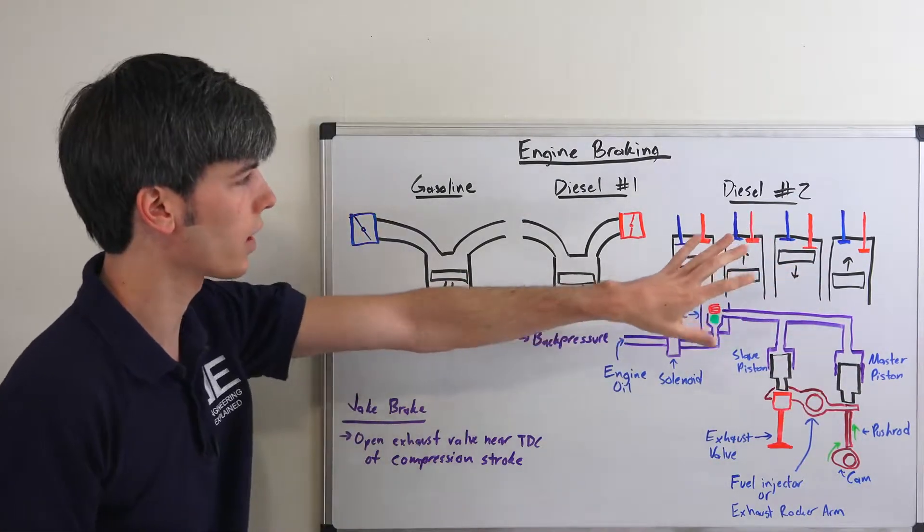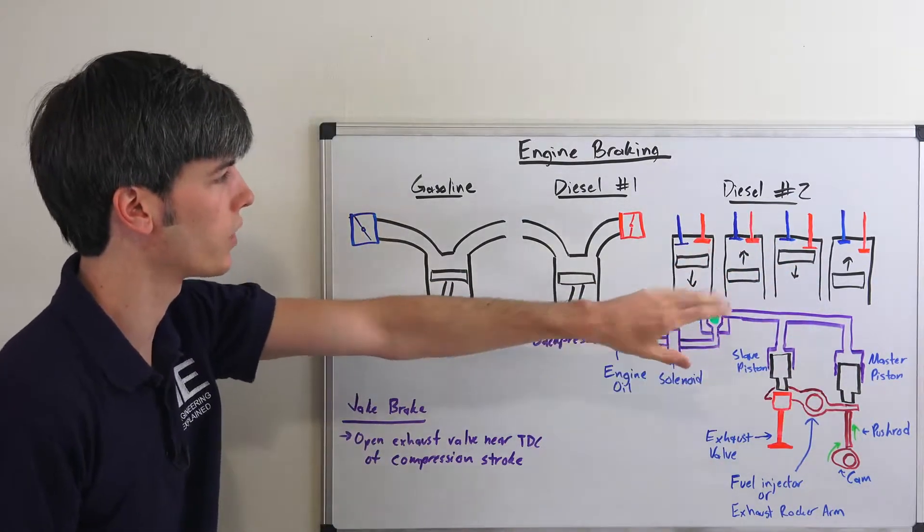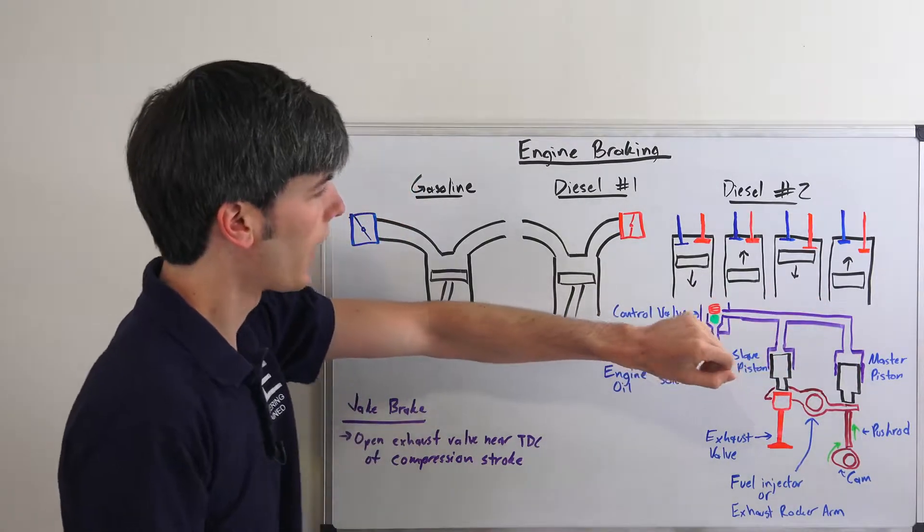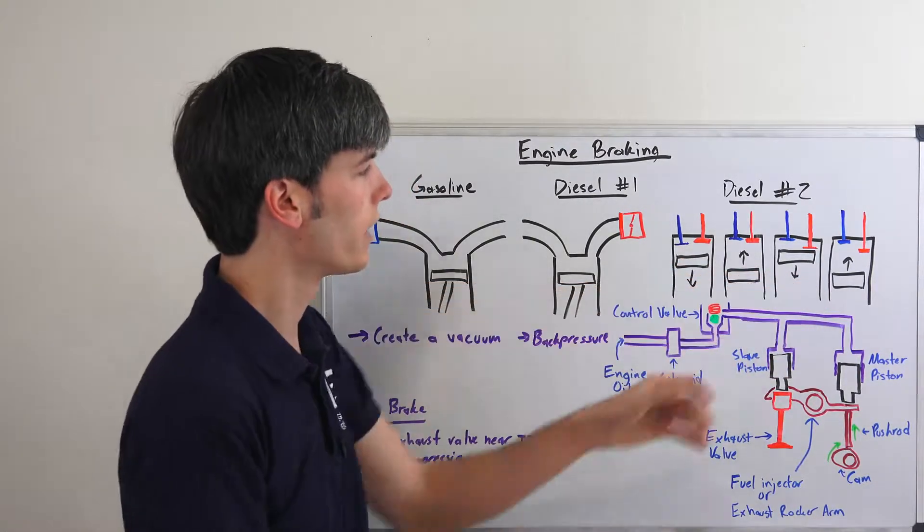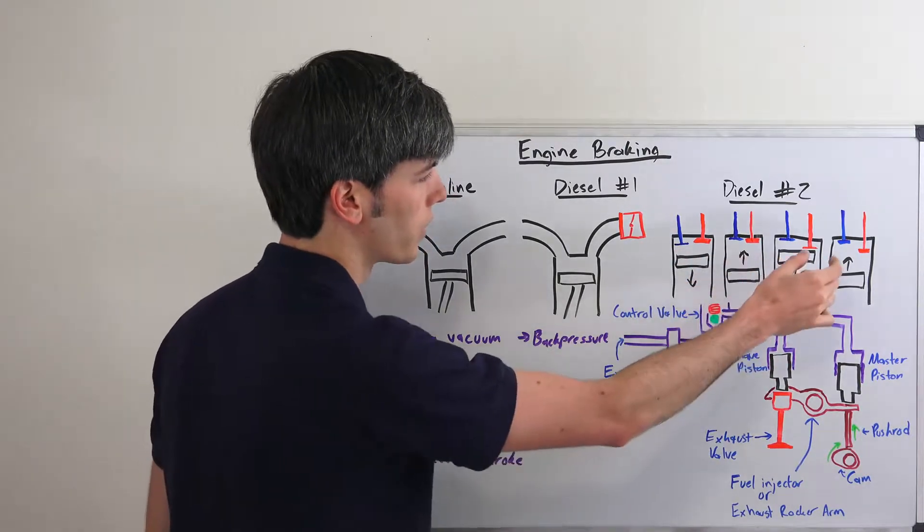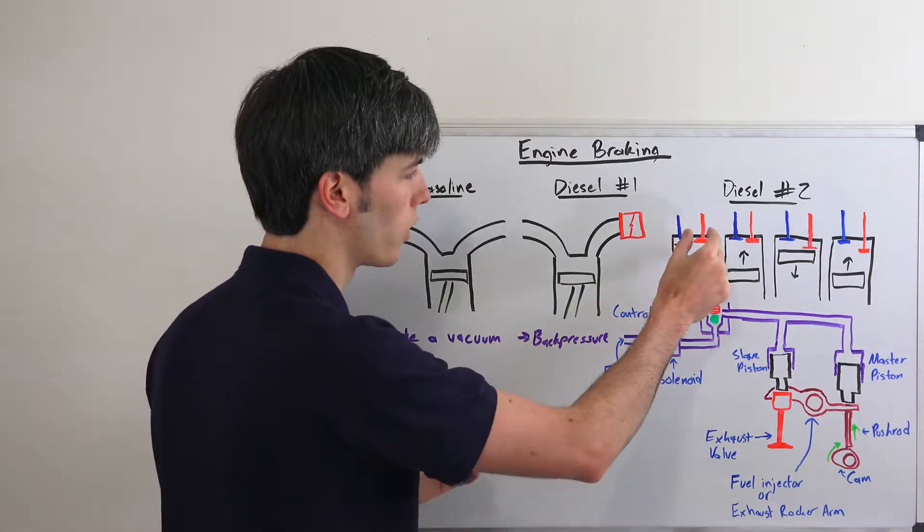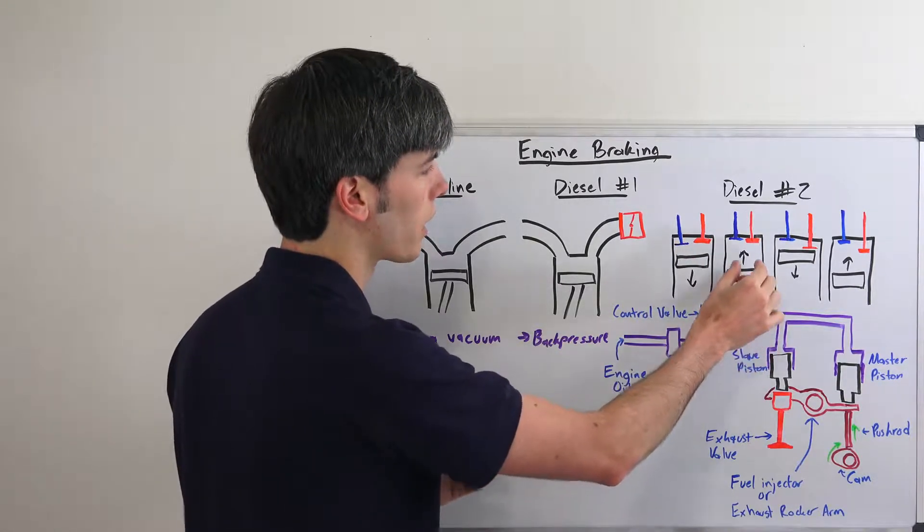So then we have our final method, which is the jake brake. It's commonly referred to as a jake brake after the company that invented it, I believe, which is called Jacobs. And so here what we have is our four strokes: we've got our intake, compression, power, and exhaust. And what they've done with this system is, intake happens like normal, compression happens like normal,